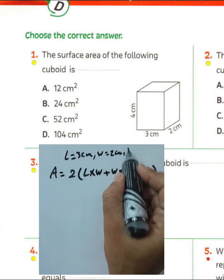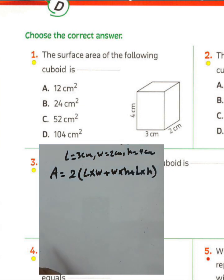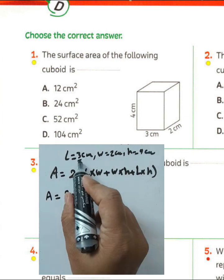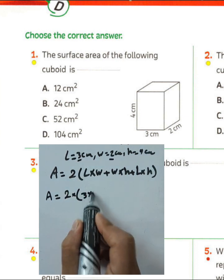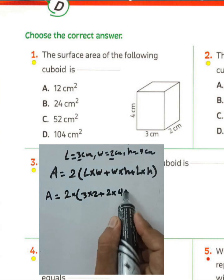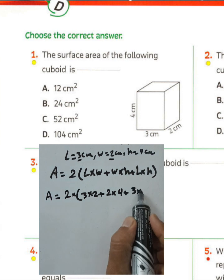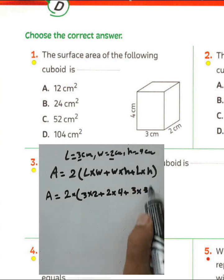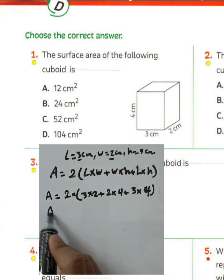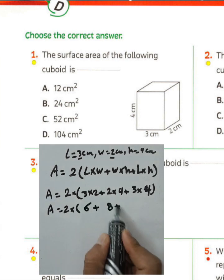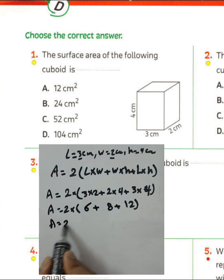In this example, length was 3 cm, width was 2 cm, and height was 4 cm. We find the surface area by computing: length times width (3×2), width times height (2×4), and length times height (3×4). That gives us 6, 8, and 12.